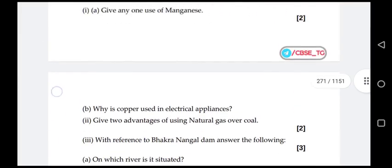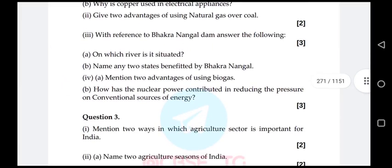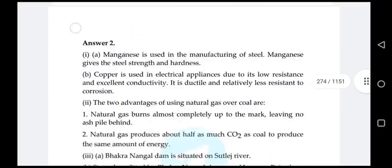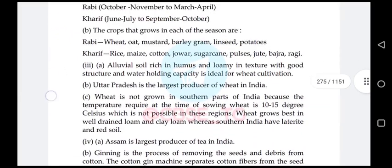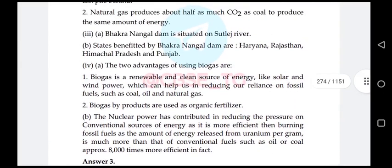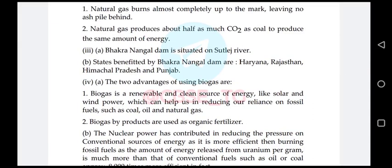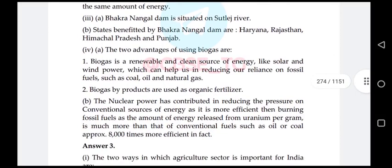Sub-question four: mention two advantages of using biogas, and how nuclear power has contributed in reducing pressure on conventional energy sources. Biogas is a renewable and clean source of energy that reduces reliance on fossil fuels; its by-products are used as organic fertilizers. Nuclear power is more efficient than burning fossil fuels — energy released from uranium per gram is approximately 8,000 times more than conventional fuels such as oil or coal.